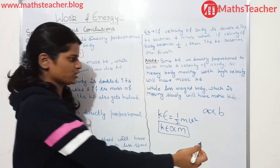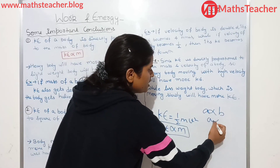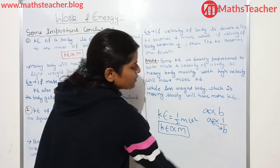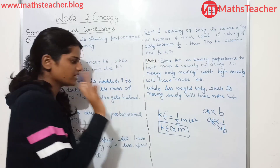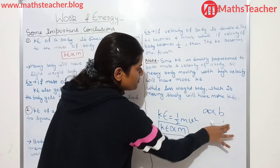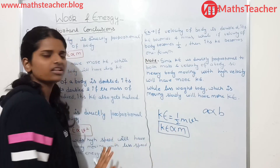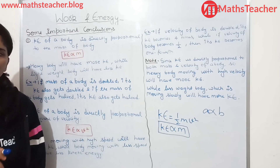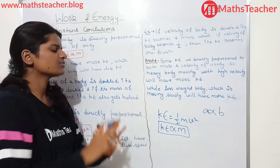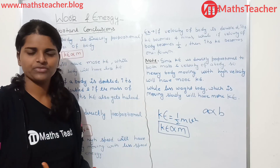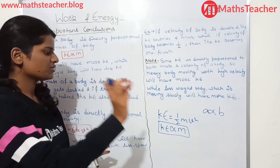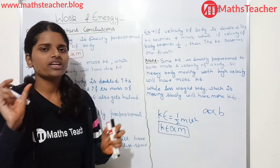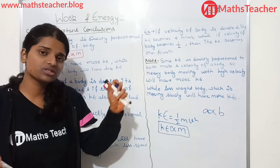Directly proportional relation: when it happens, both physical quantities increase together. If one physical quantity increases, the other one will increase. If one physical quantity reduces, the other one will also reduce. So kinetic energy is directly proportional to the mass of the body.